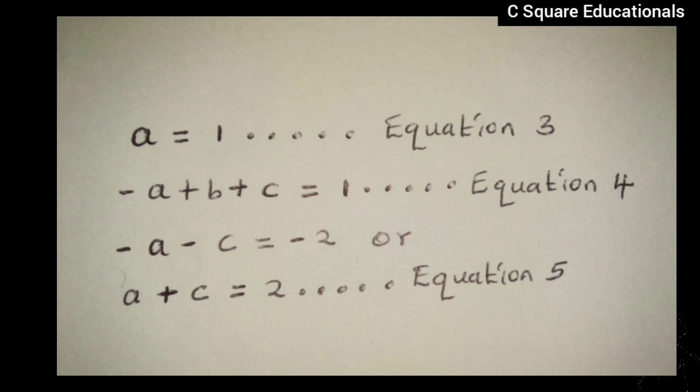Negative A plus B plus C is equivalent to 1. Let us call this our equation 4. And negative A minus C is equivalent to negative 2, or A plus C is equivalent to 2. Let us call this our equation 5.